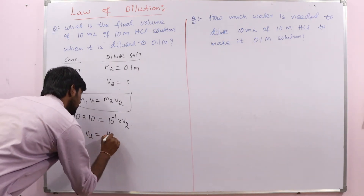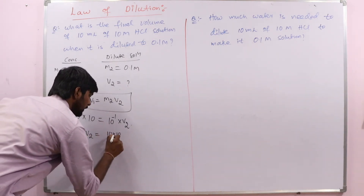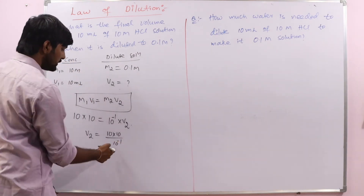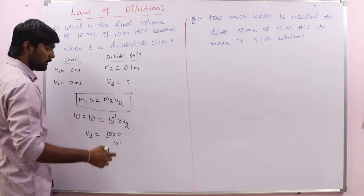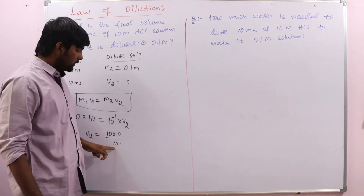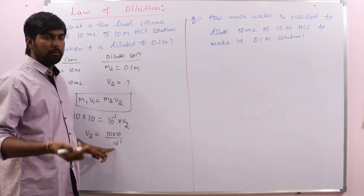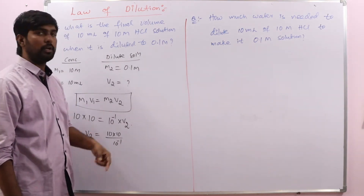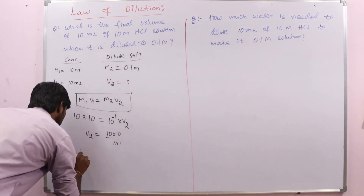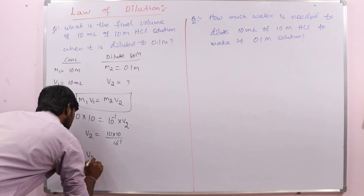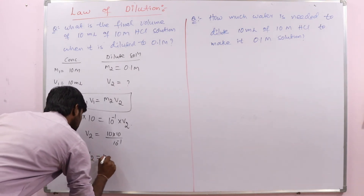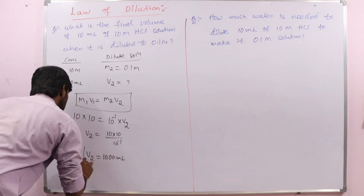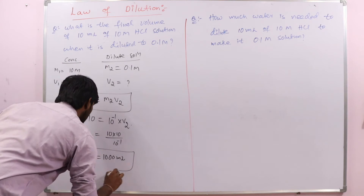Rearranging: V2 = (10 × 10) / 10⁻¹ = 10 × 10 × 10 = 1000. Therefore V2, the final volume, is equal to 1000 mL.